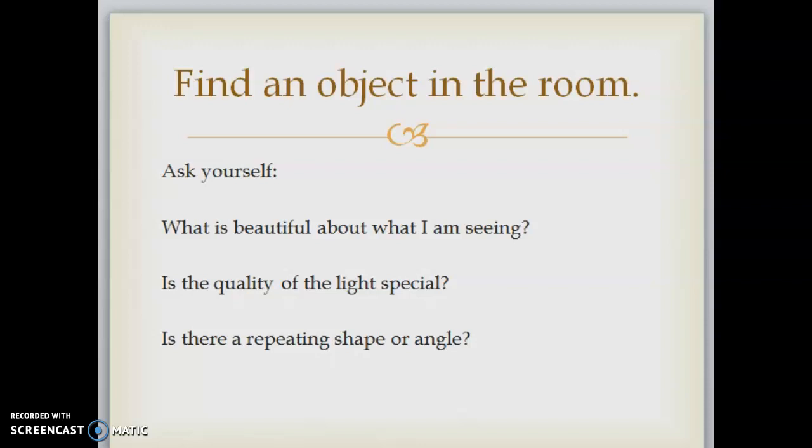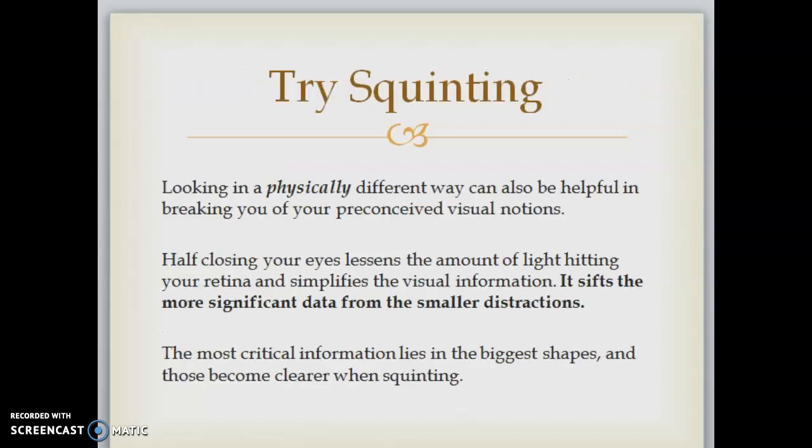Try squinting. Looking in a physically different way can also be helpful in breaking you of your preconceived visual notions. Half closing your eyes lessens the amount of light hitting your retina and simplifies the visual information. It sifts the more significant data from the smaller distractions. The most critical information lies in the biggest shapes, and those become clearer when squinting. Can you see simple shapes of the object you chose when you squint? What are they?